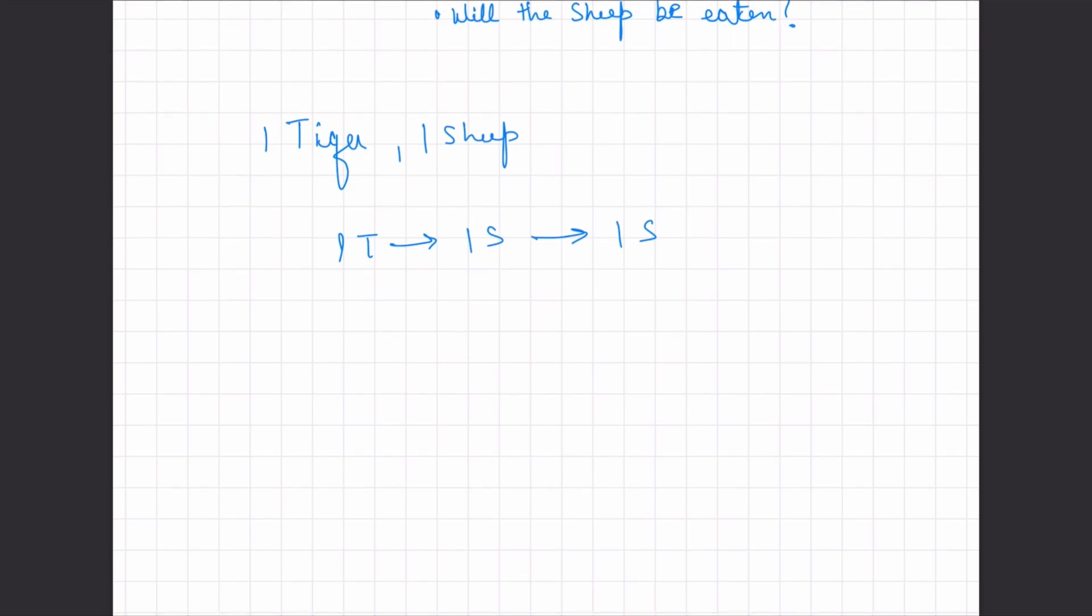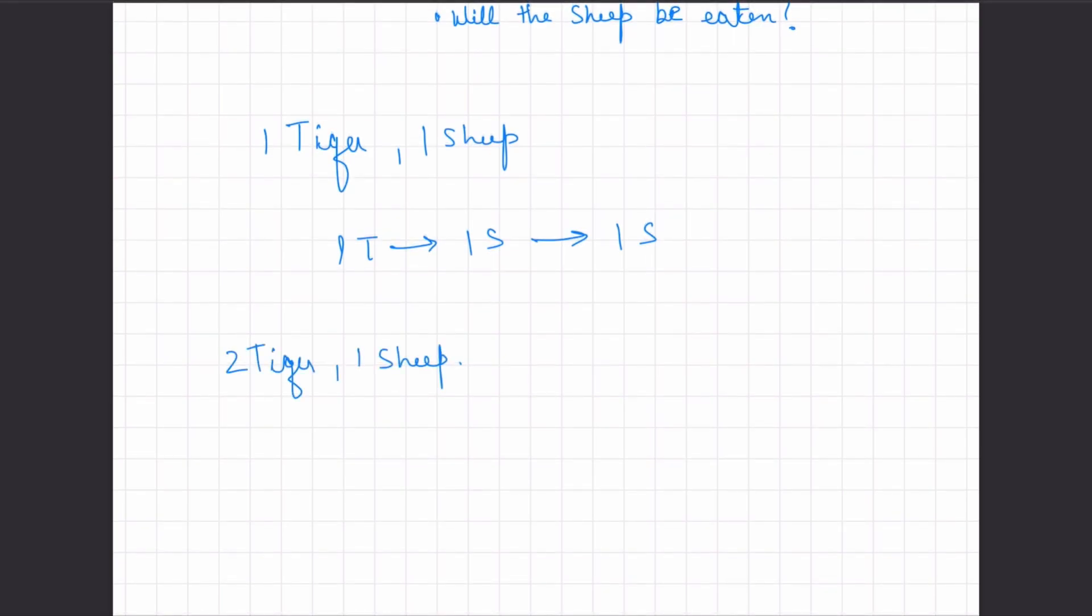Now let's talk about the two tiger case. So think about this. If there are two tigers, let's say this is tiger one, this is tiger two, and this is sheep. So if tiger one eats sheep, then what would happen is you would get into the situation where there's tiger two and there is sheep.